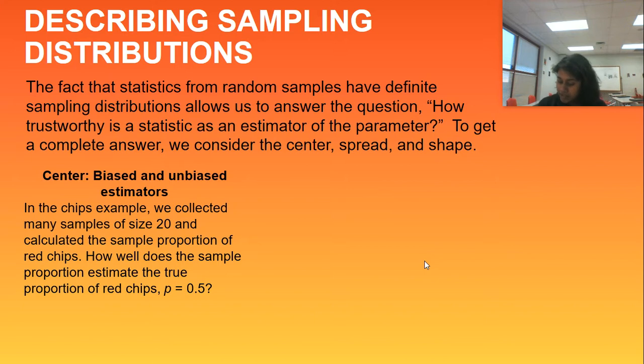So an unbiased estimator, this definition is going to pop up in just a second, but I'm going to start you with it. A statistic used to estimate a parameter is an unbiased estimator if the mean of its sampling distribution must be equal to the value of the parameter being estimated. So let's say I want to talk about the median, then my median should be equivalent to the mean of the sampling distribution, not x bar, that would be the mean of an individual sample. So the mean of the sampling distribution itself should be equivalent to any of the estimators we are using, either median or a sample's mean.